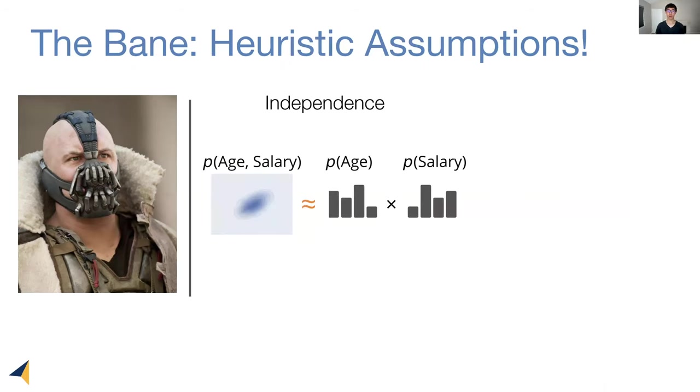The first heuristic is called the independence assumption. Intuitively, it means that it assumes a distribution over several columns is approximated by the product of one-dimensional distributions. Through this approximation, we lose information about our dataset.